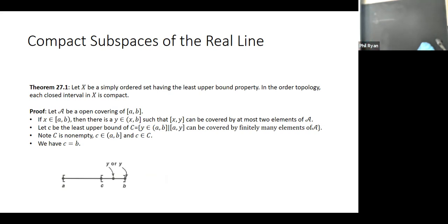And c actually equals b. If c were less than b, then by step one we would have a y between c and b, and by adding that element of the cover we would get a finite cover of something larger than [a,c] — still inside [a,b] and still finite. So we get there eventually.